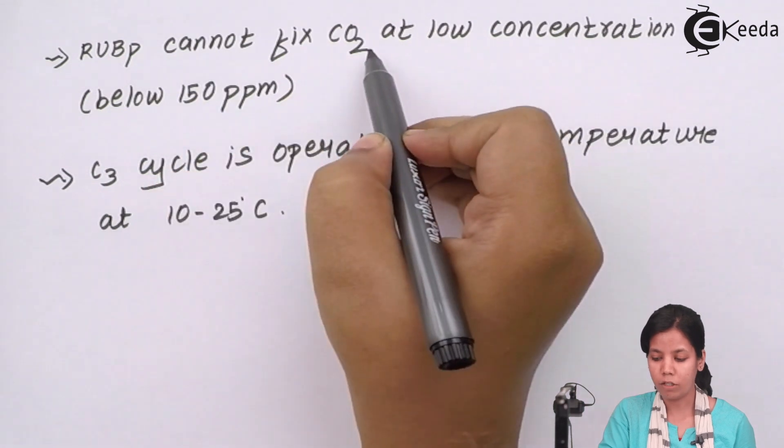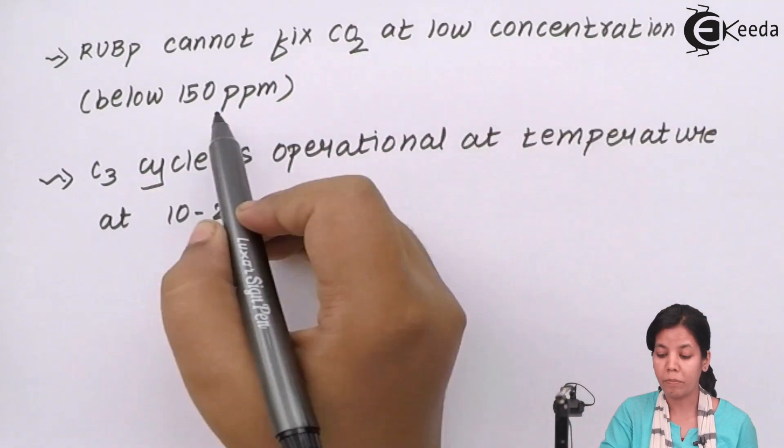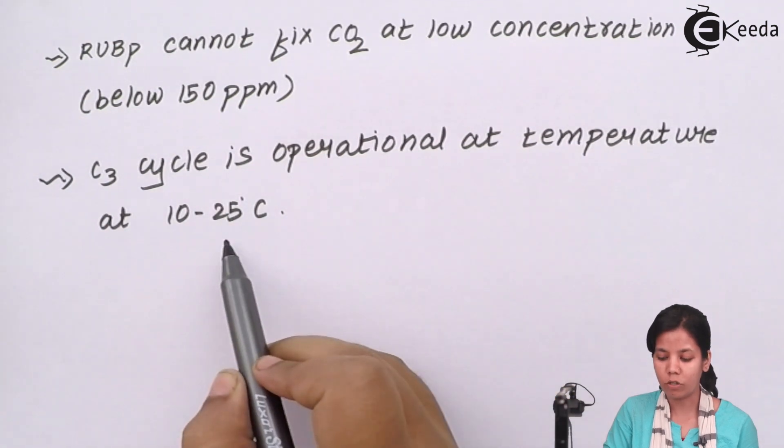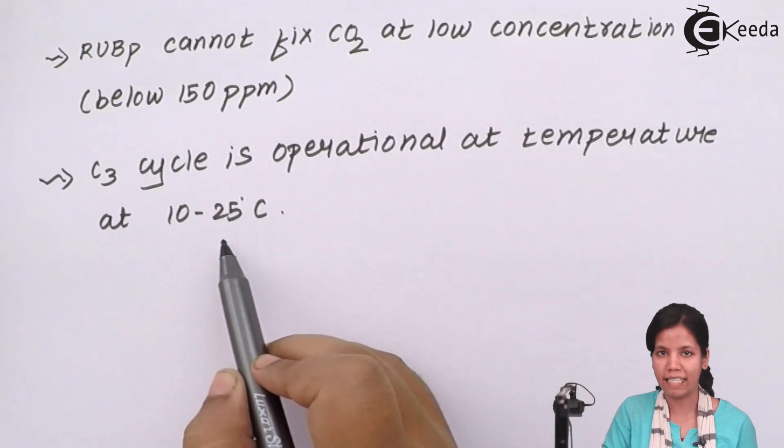RUBP cannot fix CO2 at low concentrations below 150 ppm, and C3 cycle is operational at a temperature of 10 to 25 degrees Celsius.